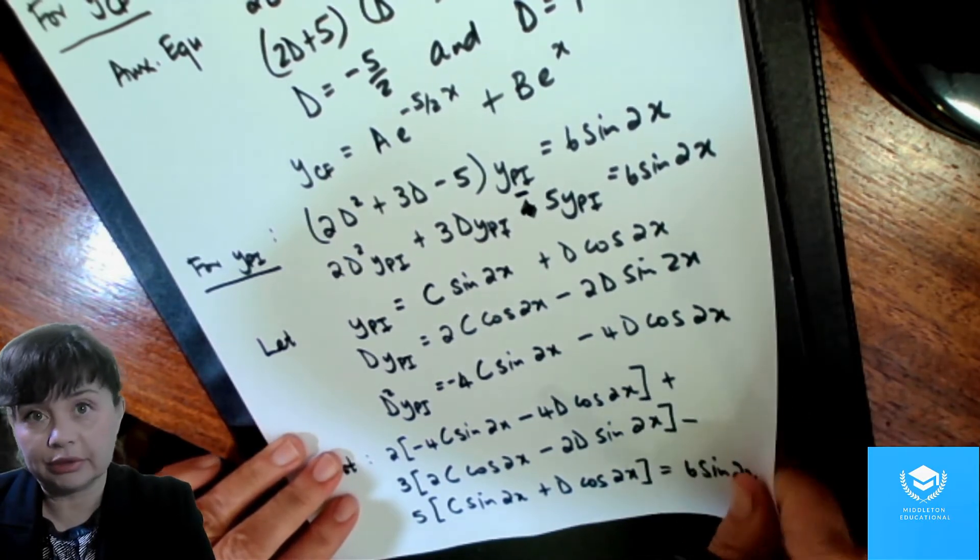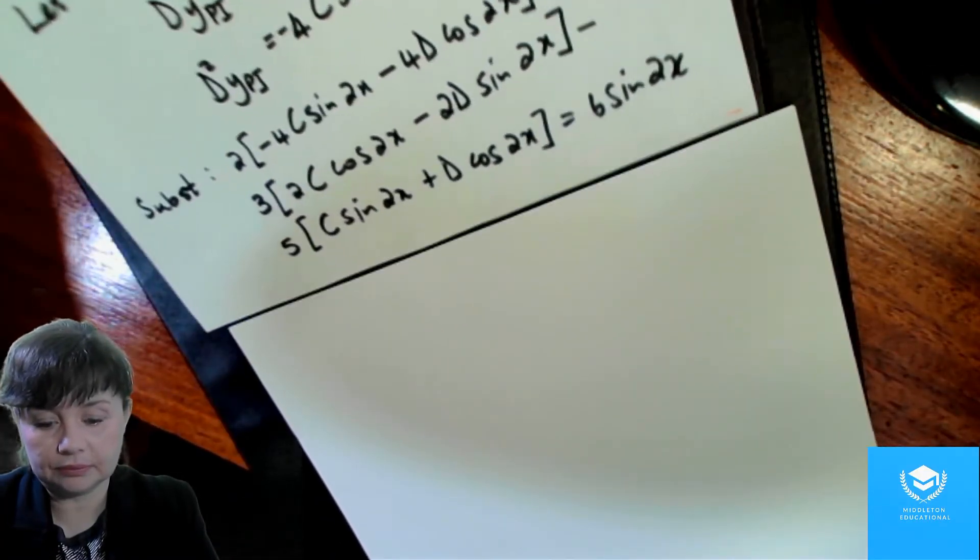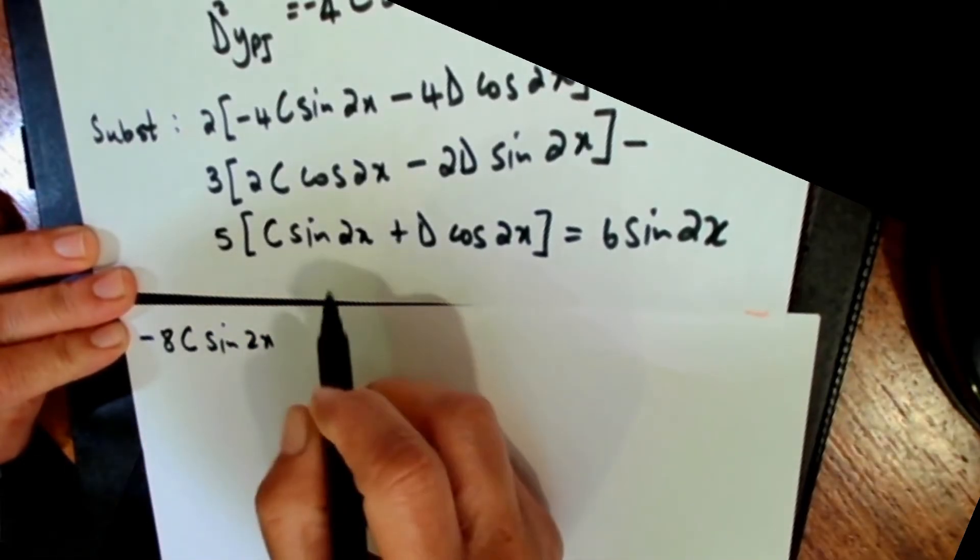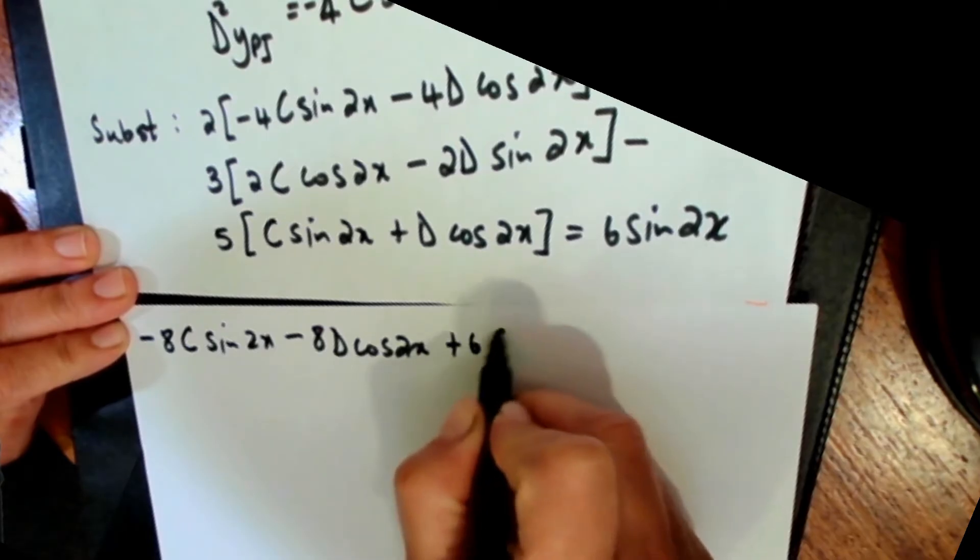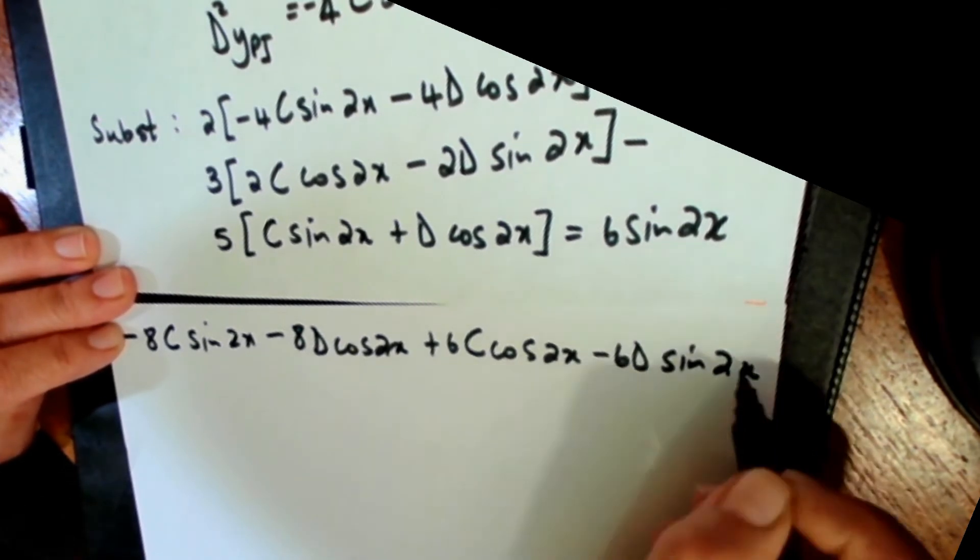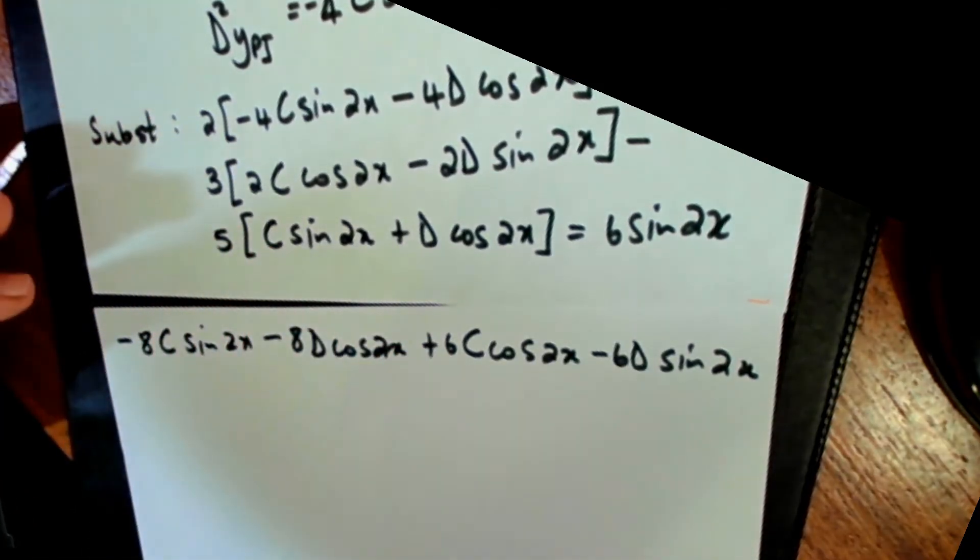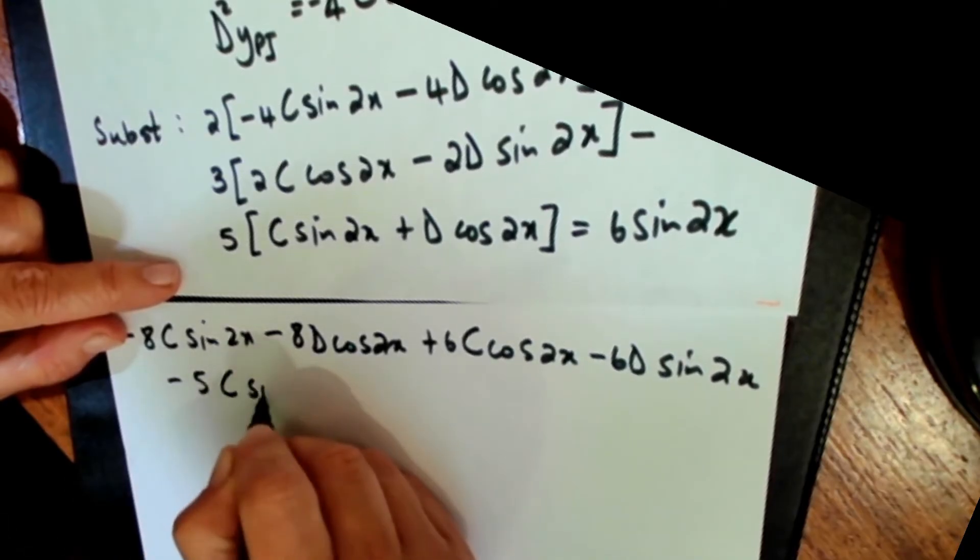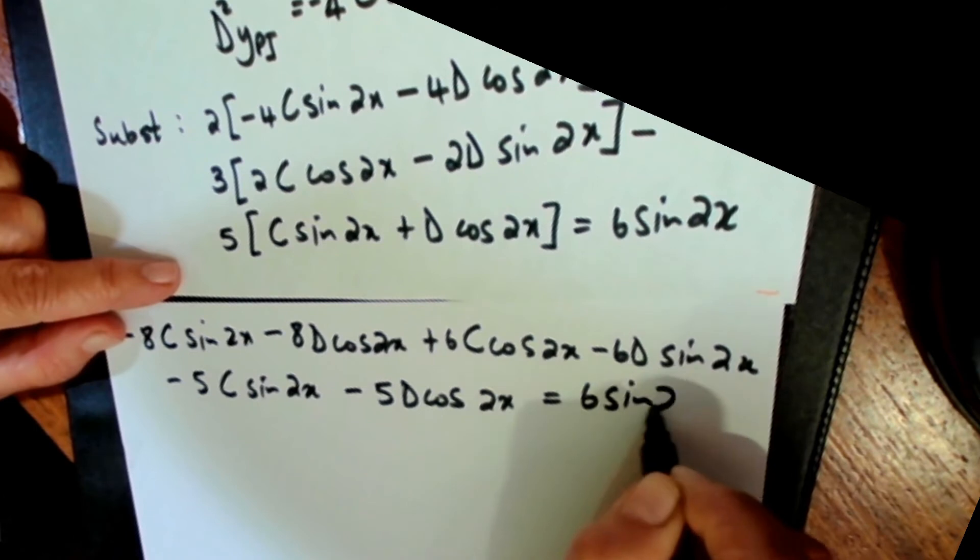And then we have to simplify. So let's have a look. What do we get? So we get minus 8c sine 2x minus 8d cos 2x plus 6c cos 2x minus 6d sine 2x. And you might as well just spread your equation out when you multiply. Don't try and squeeze everything into one little corner because all it does is confuse you. So use the space. You can just get more paper. Minus 5c sine 2x minus 5d cos 2x. And that has to equal 6 sine 2x.